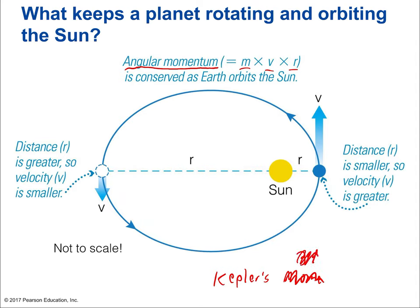Kepler's second law says that objects speed up when they get closer to the sun and slow down when further away. Kepler's third law says there is a direct proportionality between the cube of the semi-major axis and the square of the period. The idea is that angular momentum is conserved — the product M times V times R, the mass, velocity, and radius of the planet, must stay the same. M, V, and R can each change, but their product cannot. As the radius becomes small, velocity is great; as radius becomes larger, velocity becomes smaller.